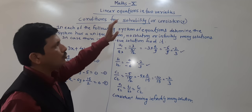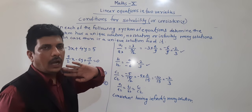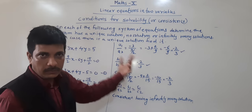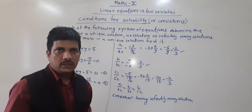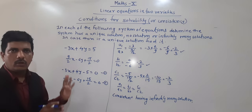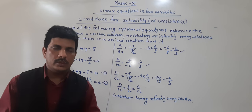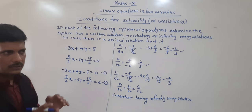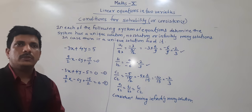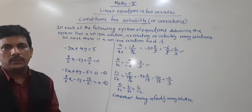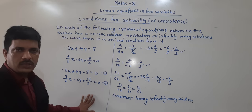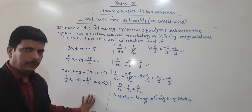Today we have seen conditions for solubility — how to decide whether there is a unique solution, no solution, or infinitely many solutions. We have seen one example of each type. This is a very important point, with some reference from the second chapter also. Solve the same problems from NCERT and complete the exercises. Also solve the worksheet given on this topic. Thank you.